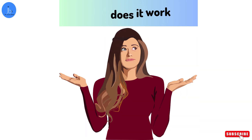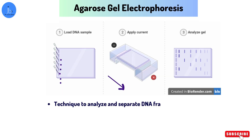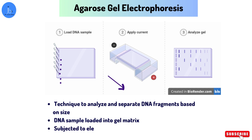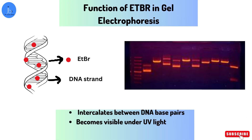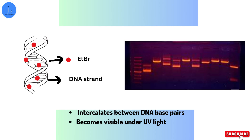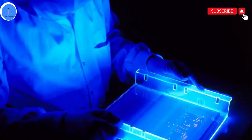During gel electrophoresis, a DNA sample is loaded into a gel matrix and subjected to an electric field. The DNA fragments, which are negatively charged due to their phosphate backbone, begin to move toward the positive electrode. EtBr intercalates itself between the base pairs of the DNA molecule. This intercalation causes the dye to become fluorescent, emitting a visible light signal under UV light.